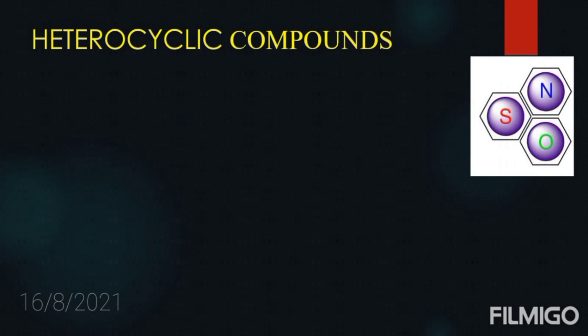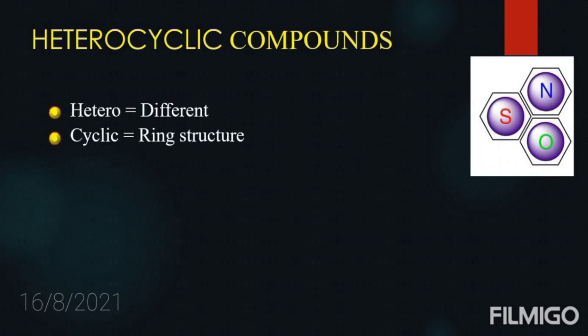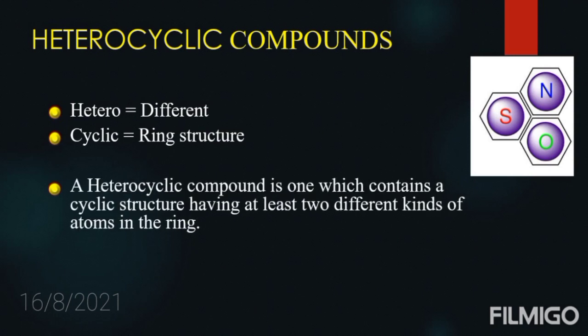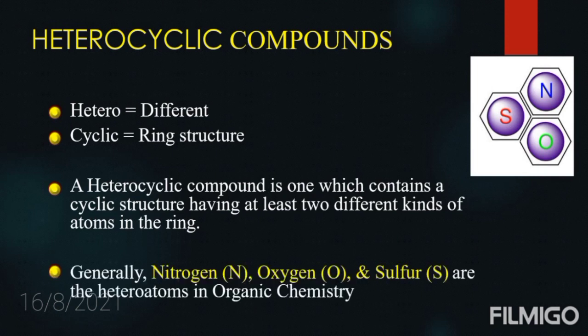Let us discuss what heterocyclic compounds are. 'Hetero' means different, and 'cyclic' means ring structure. So if the ring is made up of carbon and a non-carbon atom — that is a heteroatom — it may be nitrogen, oxygen, sulfur, zinc, etc., then the compound is referred to as a heterocyclic compound. This domain extends sometimes to phosphorus and selenium as well.